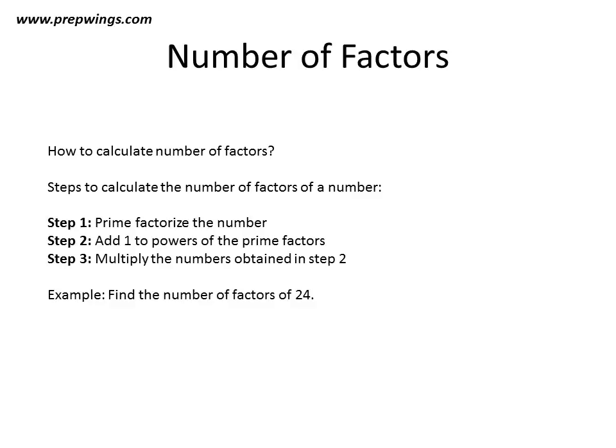In this example, we have to find the number of factors of 24. As we looked before, the number of factors of 24 is 8. In step 1, we do the prime factorization of 24: 24 is written as 2 raised to power 3 into 3 raised to power 1. In step 2, 2 has a power of 3, so we add 1 to get 3+1, and 3 has a power of 1, so it becomes 1+1. We obtain two numbers: 4 and 2. In step 3, we multiply them and get the result 8. Thus, 24 has 8 factors.